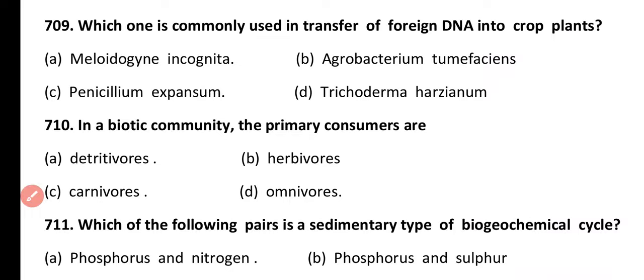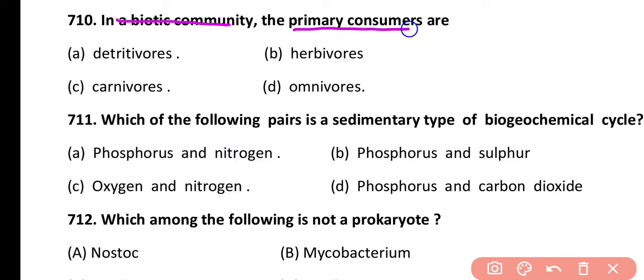Question 710. In a biotic community, primary consumers are: detritivores, herbivores, carnivores, or omnivores. Correct answer is option B. Herbivores are the primary consumers in a biotic community.